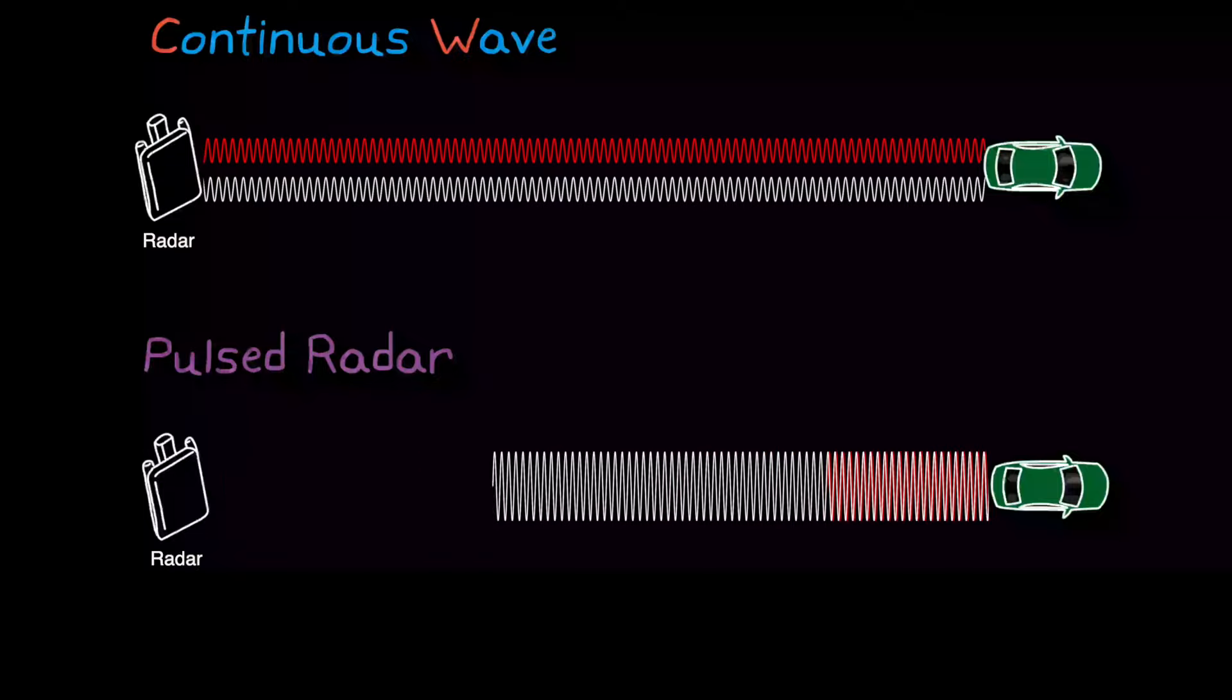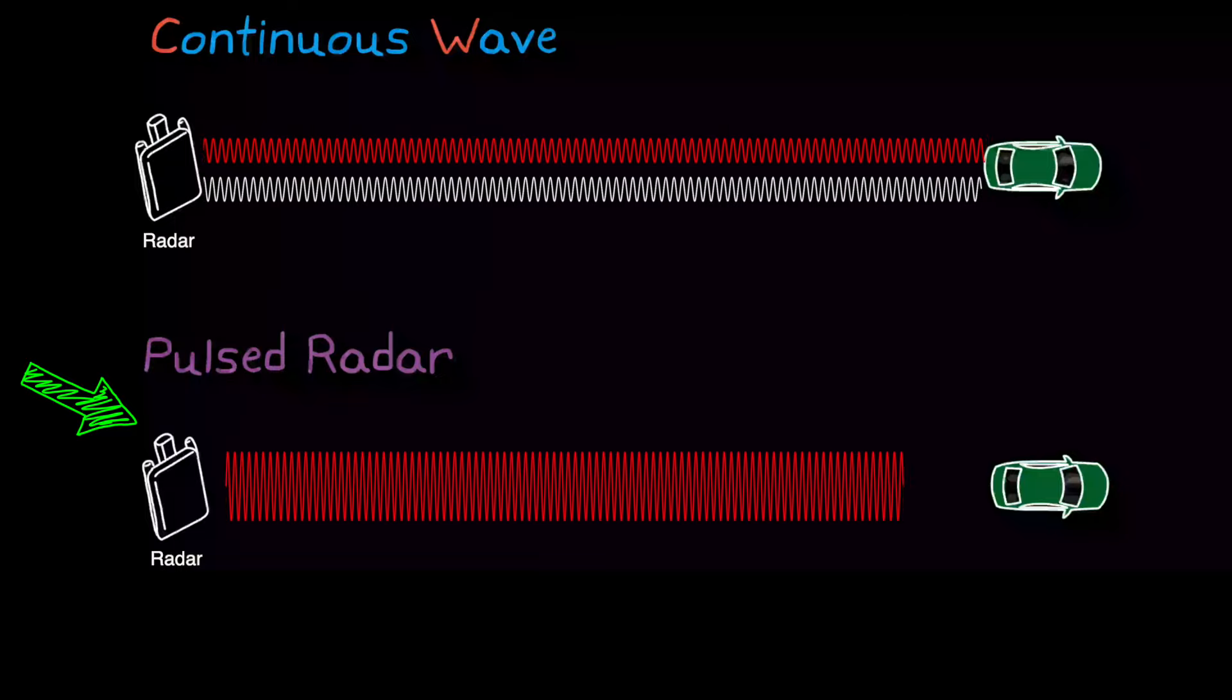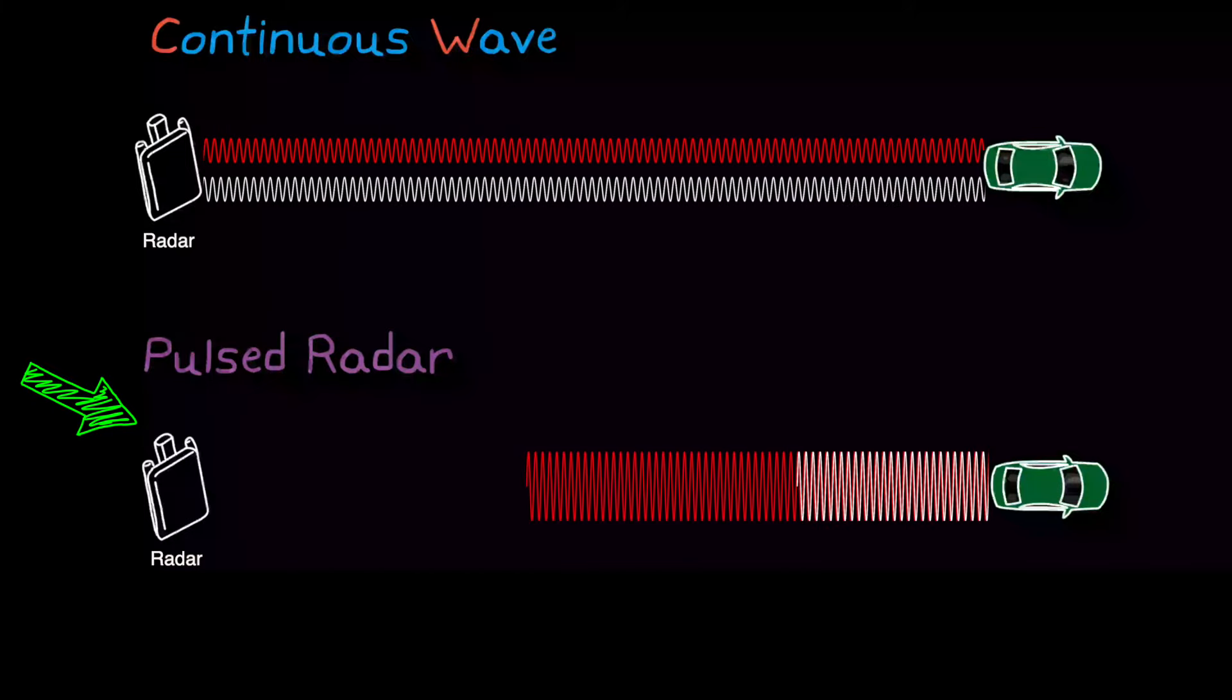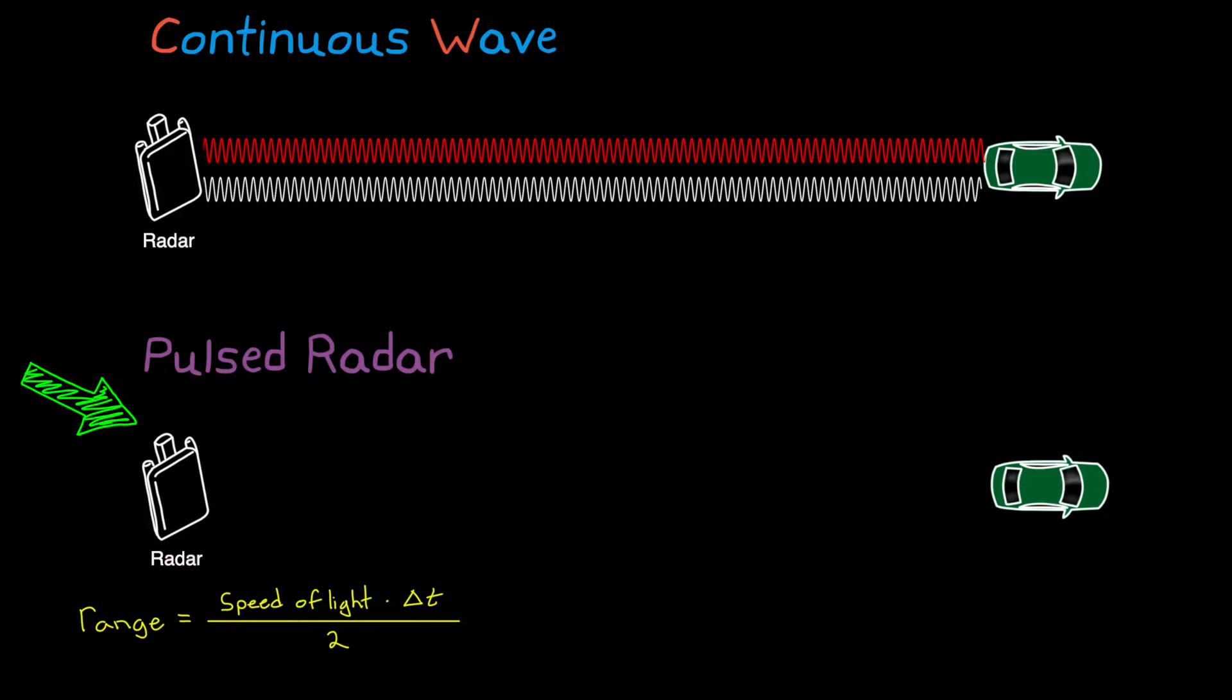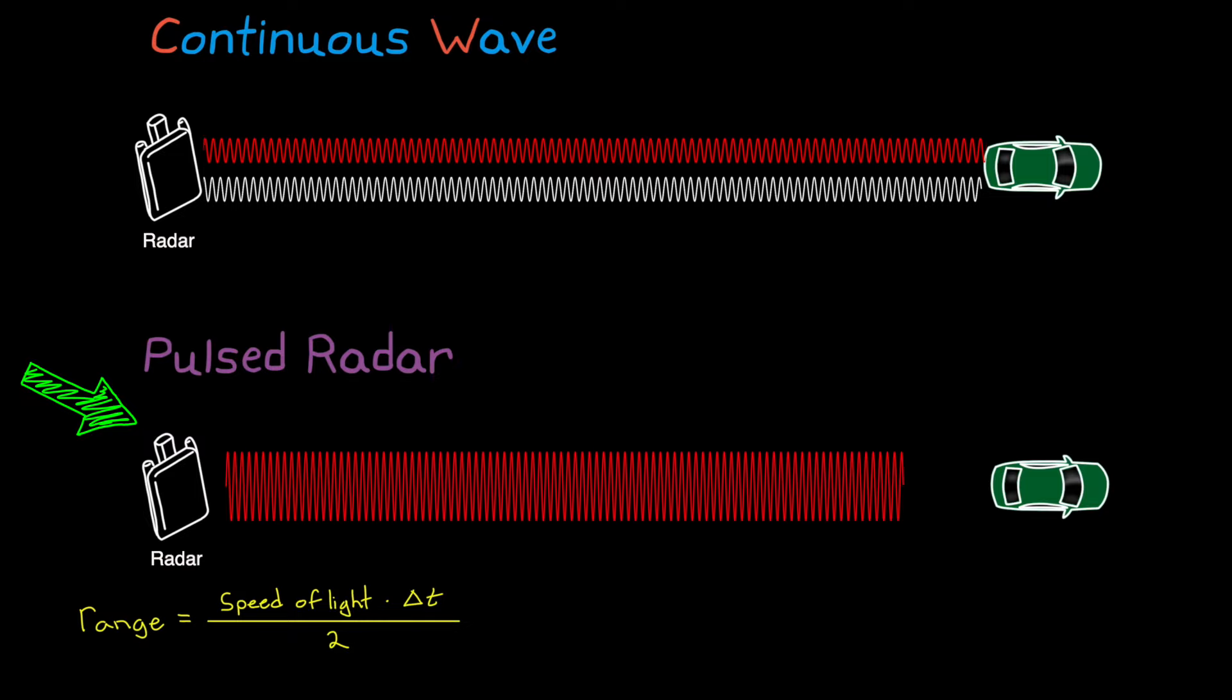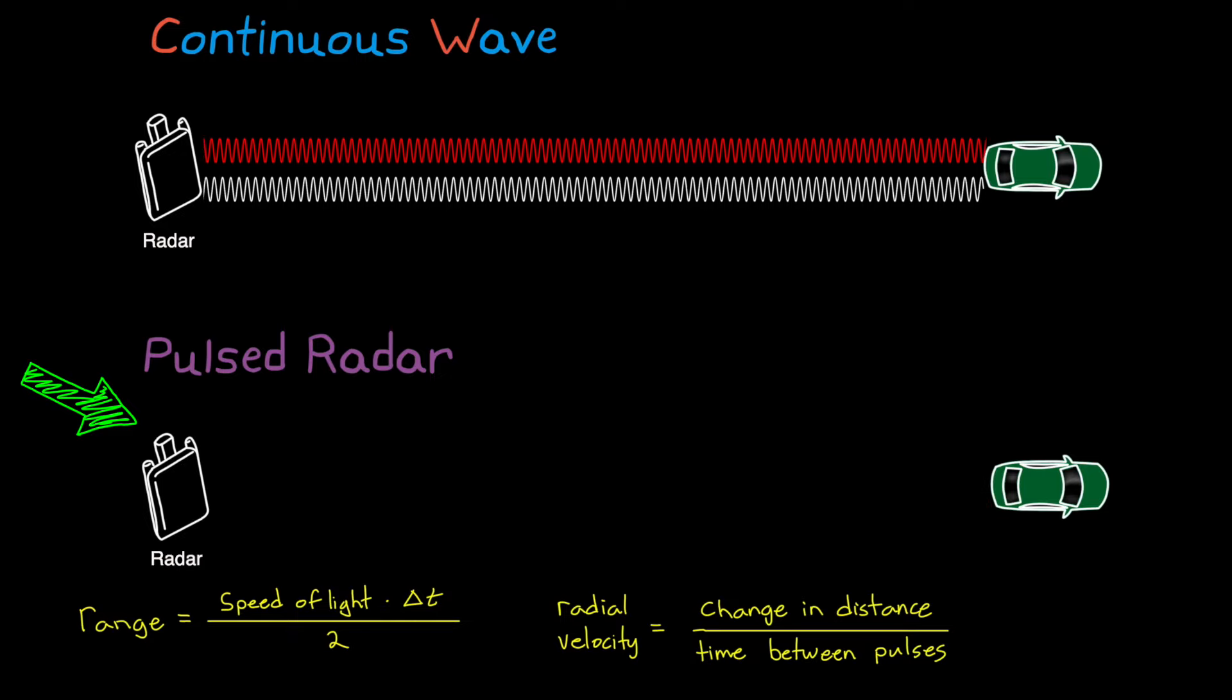This is in contrast to pulsed radar, where short duration but high energy pulses are emitted in series. With pulsed radar in its simplest form, determining range and radial velocity is relatively intuitive. We can determine the distance to an object by timing how long it takes the pulse to travel the round trip, multiply it by the speed of light to get the distance, and then divide by two to get the one-way distance.